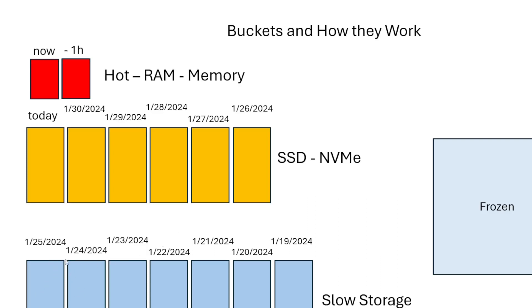For example, say I just wanted the data from 11:30 p.m. to 1:30 a.m. on the 24th to the 25th. It crosses two buckets, so it will search all the data in those two buckets. But it's still faster than searching everything here.